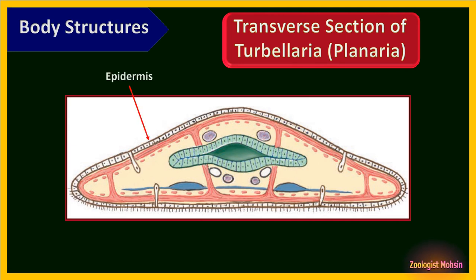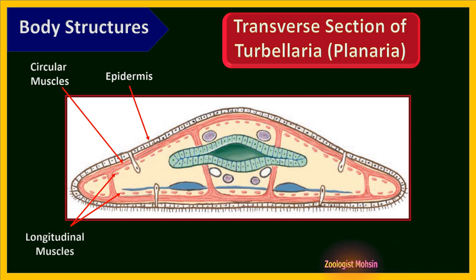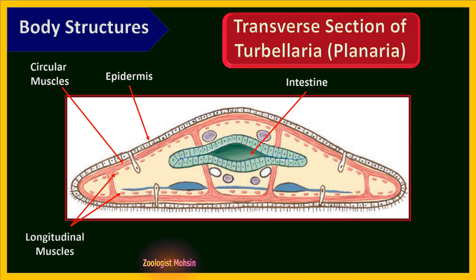Body structure of Planaria — transverse section. The outermost body covering is the epidermis, derived from ectoderm and in direct contact with the environment; some cells are ciliated while others have microvilli. Below the epidermis are two types of muscular tissue: an outer layer of circular tissue and inner strips of longitudinal tissue providing support and locomotion. The innermost layer is the gastrodermis, forming the digestive cavity.